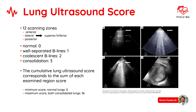In critically ill patients, we can also quantify the lung ultrasound score. We scan 12 zones as in the BLUE protocol, and each zone is numerically characterized. The cumulative lung ultrasound score corresponds to the sum of each examined region's score. The minimum score, representing normal lungs, is 0 points, whereas the maximum score — in case both lungs are consolidated — is 36 points.